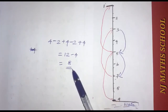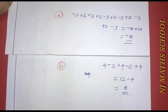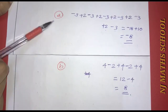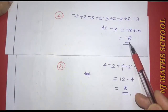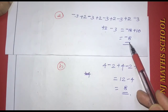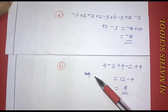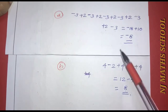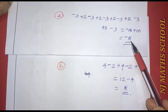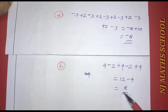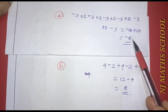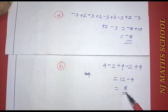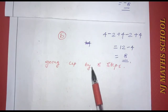We have four steps at the front: plus four, giving us eight. The sum of negative eight in part A represents going down by eight steps. In part B, what does positive eight represent? Positive eight represents going up by eight steps.